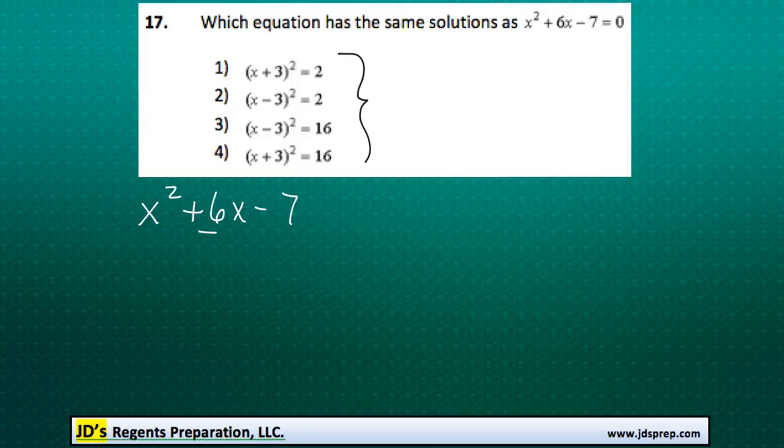And to do that, we're going to take our b term here, which is positive 6, divide it by 2 and square it. And half of 6 is 3, and 3 squared is 9.